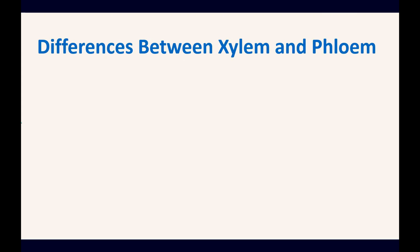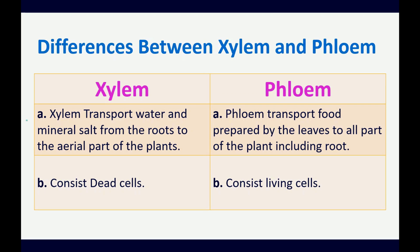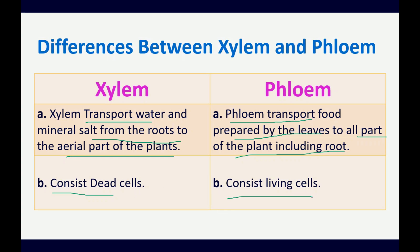Now the difference between xylem and phloem: Xylem transports water and mineral salts from the roots to the aerial parts of the plant, while phloem transports food prepared by the leaves to all parts of the plant including the roots. Xylem consists of dead cells, while phloem consists of living cells. For revision purposes, write down this difference table in your notebook.